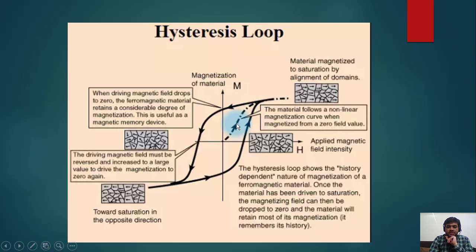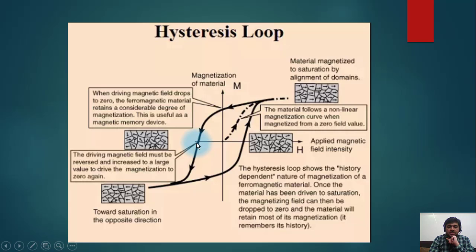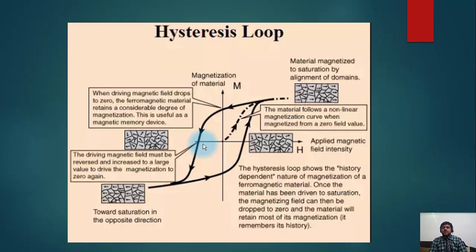Ideally, at 180° the transformer should return to zero flux. However, what actually happens is it does not return to zero — there is some residual flux at 180°. This means the driving magnetic field must be reversed and increased to a large value to drive the magnetization back to zero. So when the next cycle comes, it first has to bring this residual magnetism to zero, and then start building flux in the reverse direction. This energy spent is a loss.